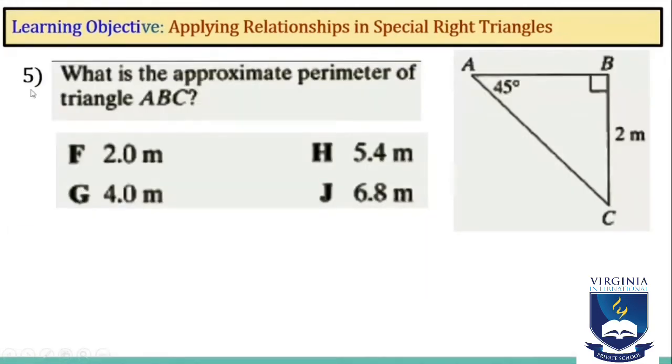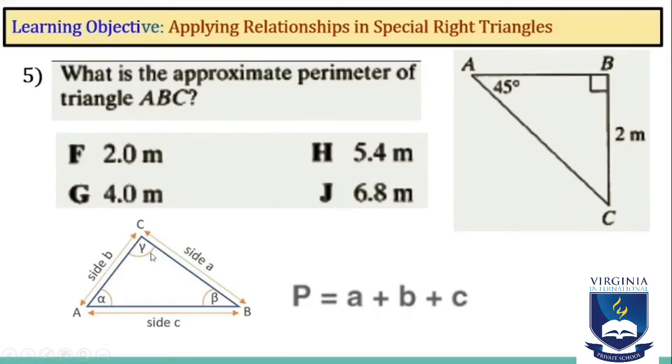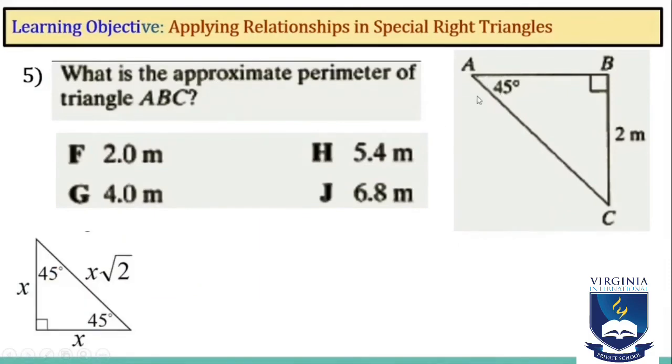Question number 5: What is the approximate perimeter of triangle ABC? We know that the perimeter is when we add up all the sides of a triangle together. To find the missing side, I am going to use the 45-45-90 triangle theorem. Here we see that BC equals 2 meters, so AB is also going to equal 2 meters. The theorem says that the hypotenuse equals x square root of 2, so it will equal 2 square root of 2 meters.